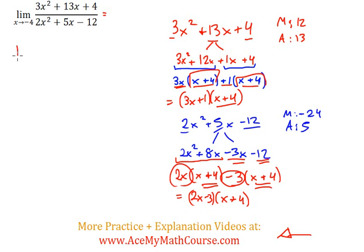Fantastic. Now I can just rewrite the whole thing. Limit as x approaches negative 4. In the numerator, I have 3x plus 1 times x plus 4. In the denominator, I have 2x minus 3 times x plus 4. Look at that. And coincidentally, we have x plus 4s here that can just cancel out.